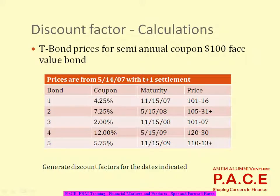The given price is 101-07/32. If it is given as hyphen-07, we take it as 7/32. By 32 is the increment — price increments happen in ranges of 1/32. So if they give hyphen-07, that is 7/32; hyphen-31 means 31/32. It's like 5 paise or 10 paise increments rather than 1 paise. 1/32 is roughly 3 paise. Increments happen in that range.